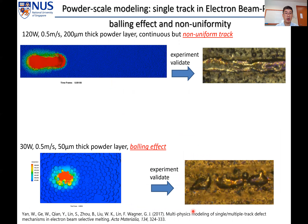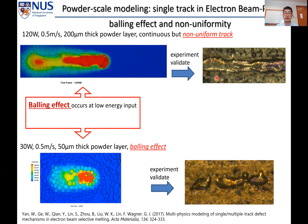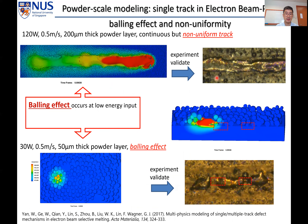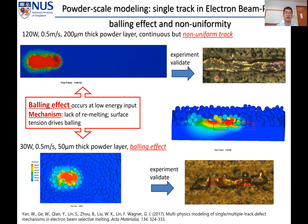For the powder melting model, we can reproduce the balling effect, non-uniform track, and also understand the underlying physics, which is essentially due to surface tension.